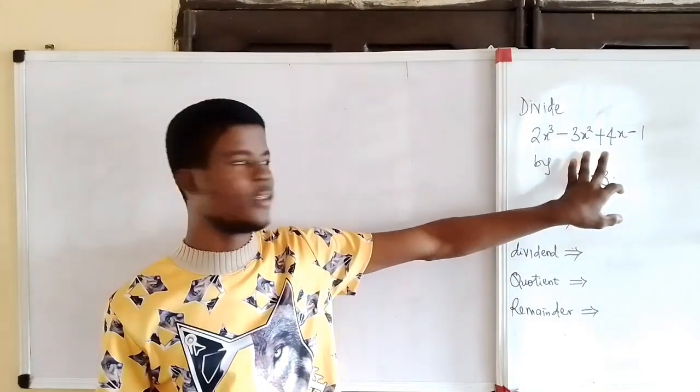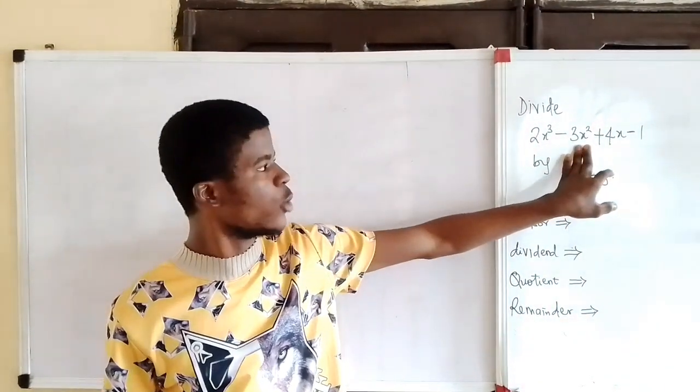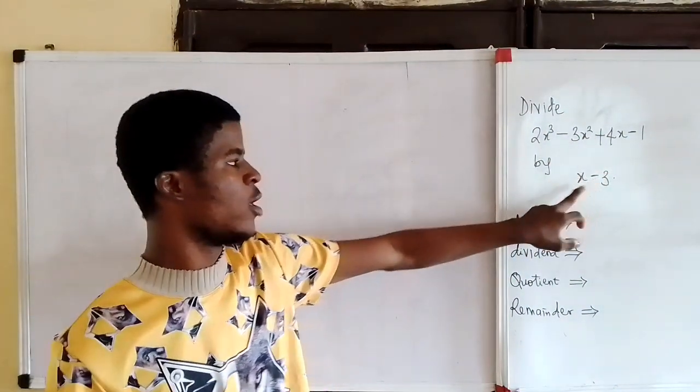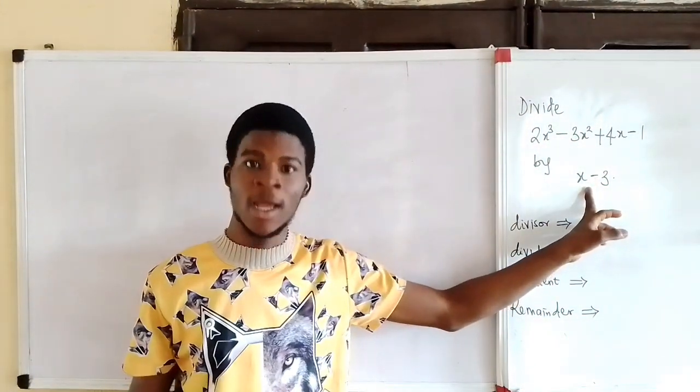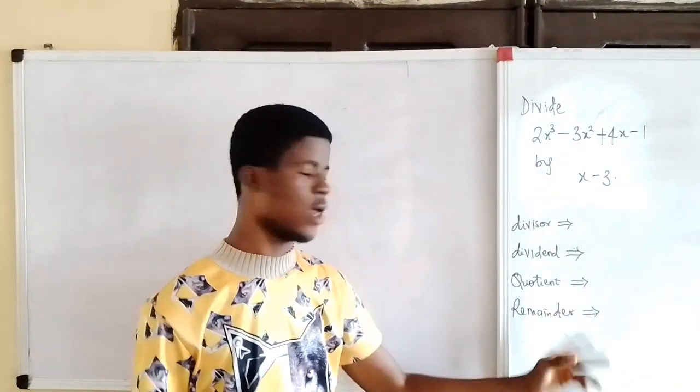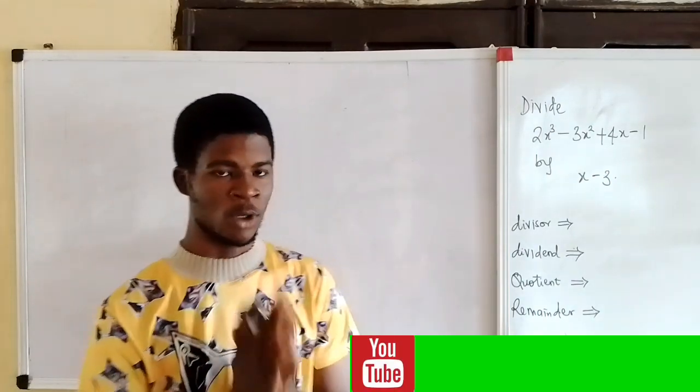I want to divide this expression 2x cubed minus 3x squared plus 4x minus 1 by x minus 3, and we are going to state the divisor, the dividend, the quotient and the remainder. Let's watch.